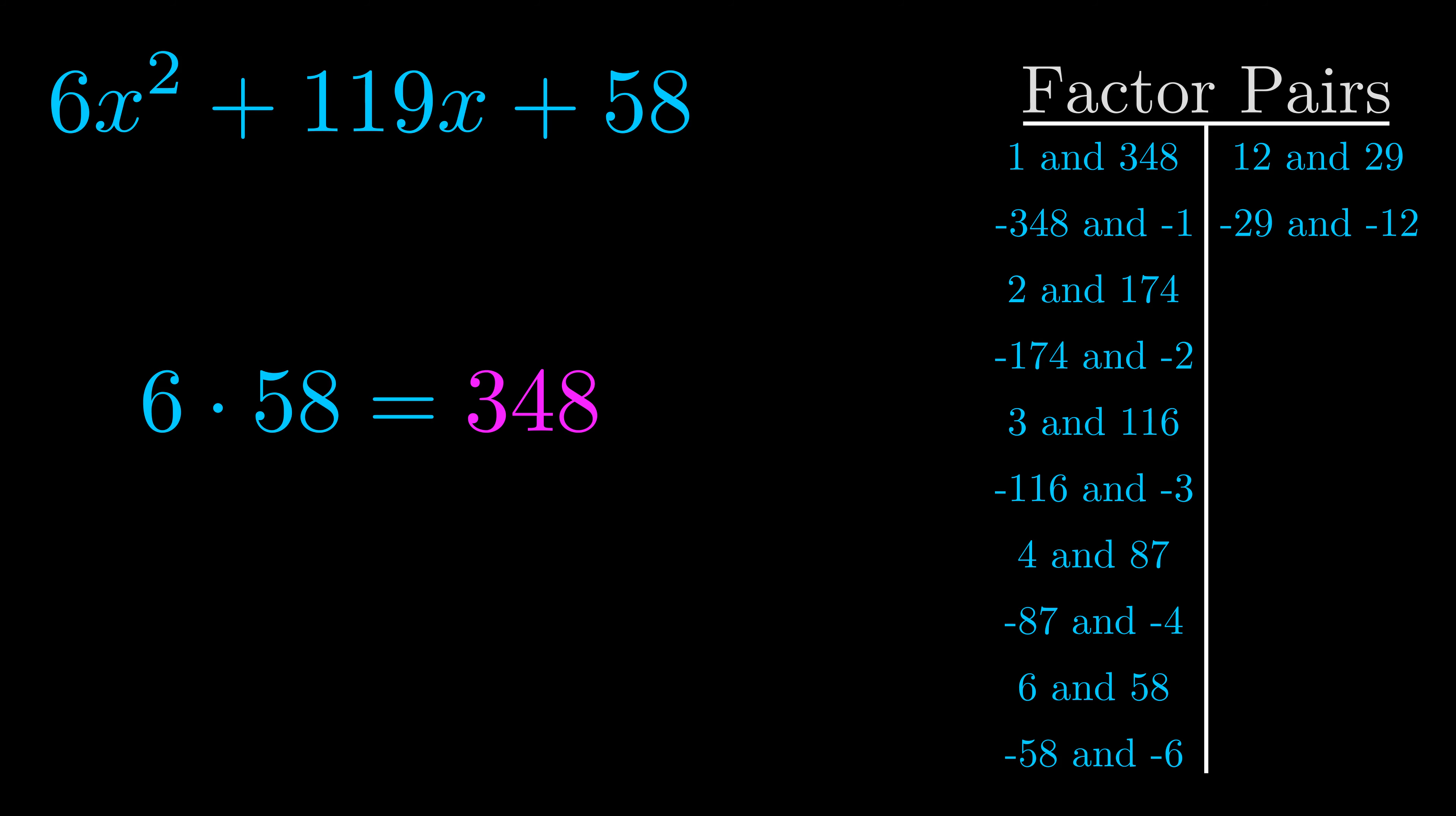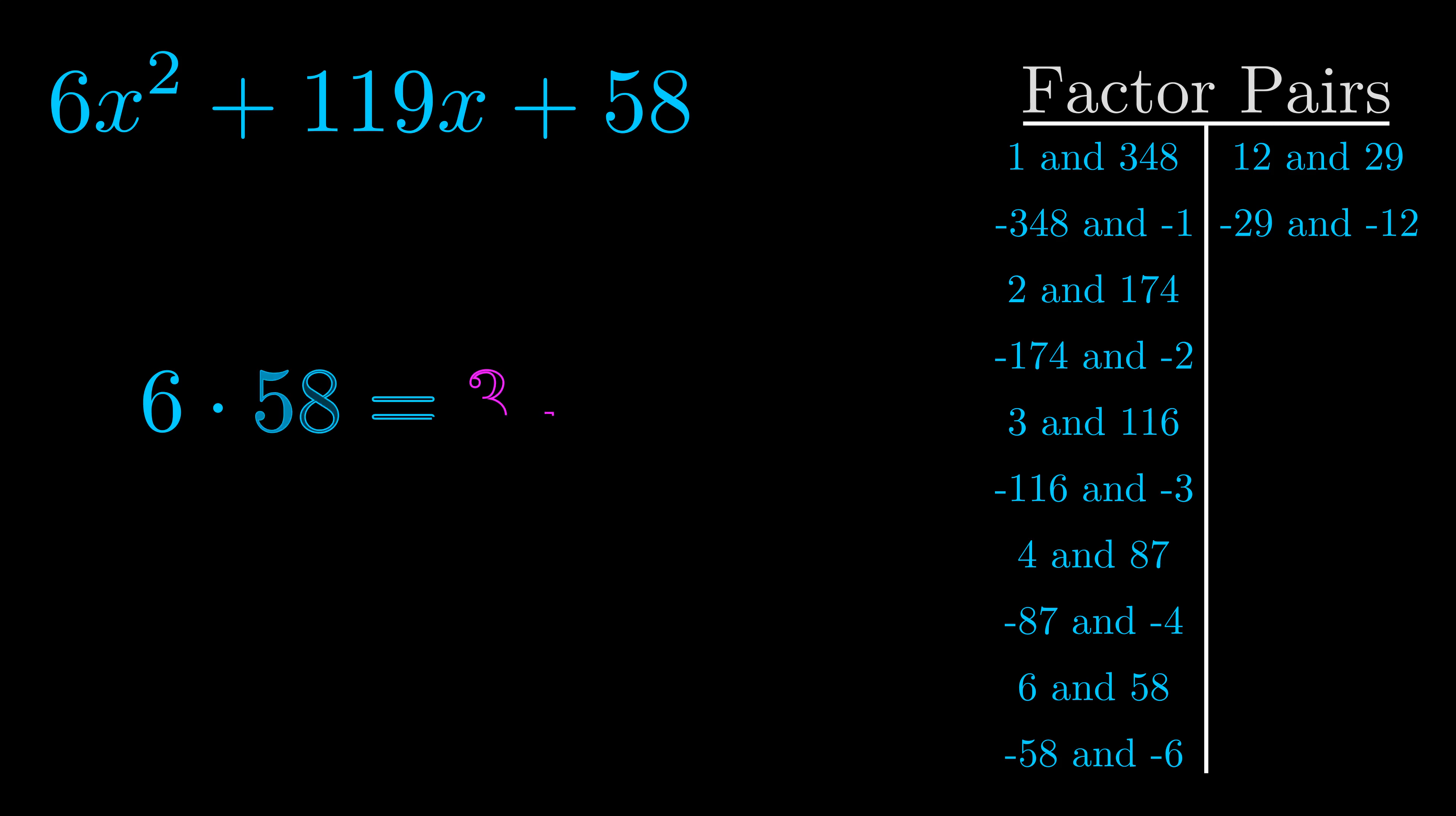Once you have these factor pairs, the goal is to find which of these pairs adds to the b value. The b value is the coefficient on the x term, the middle term that we haven't done anything with yet. And really this is the only factor pair that we need.